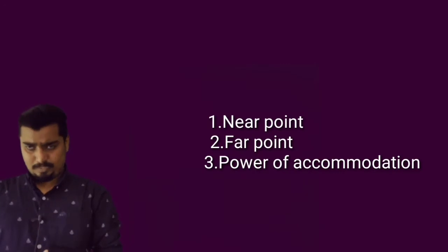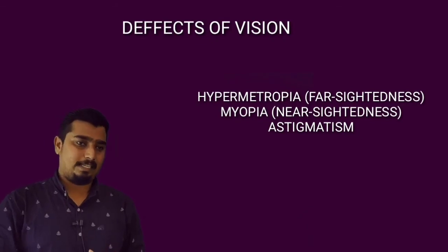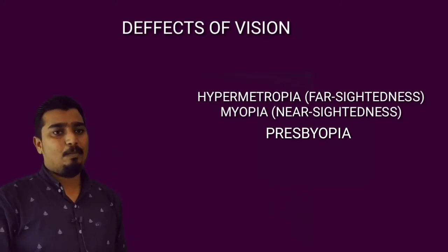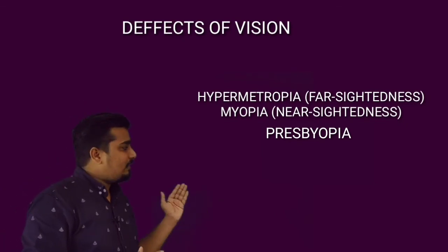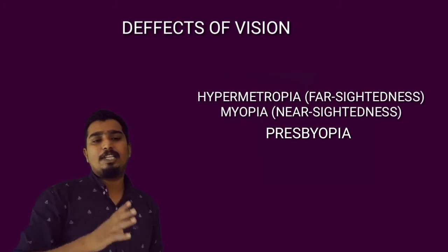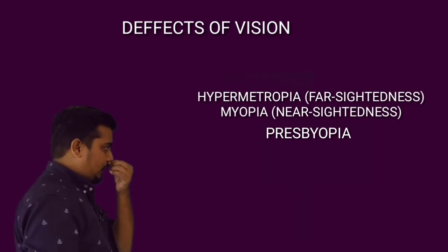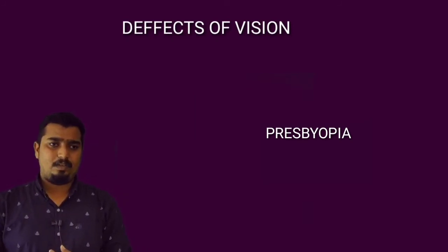We are going to discuss three defects of vision: first, hypermetropia (long-sightedness or far-sightedness); second, myopia (short-sightedness); and third, astigmatism.